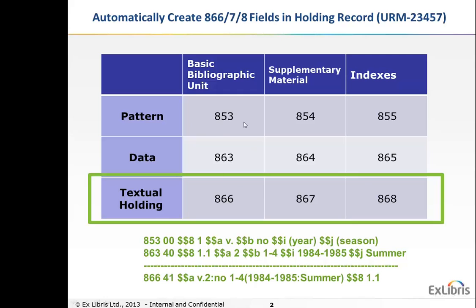Each one of these has a different purpose. The 853 is the pattern of how we want this information to be displayed. So it doesn't have actual data, it just has a pattern which tells us we want the volume, then the number, year, and then season — this just defines the pattern of what it's supposed to look like. The 863 field defines the data itself, which is the actual volume number, the issue numbers, year, and season. This is actual data.